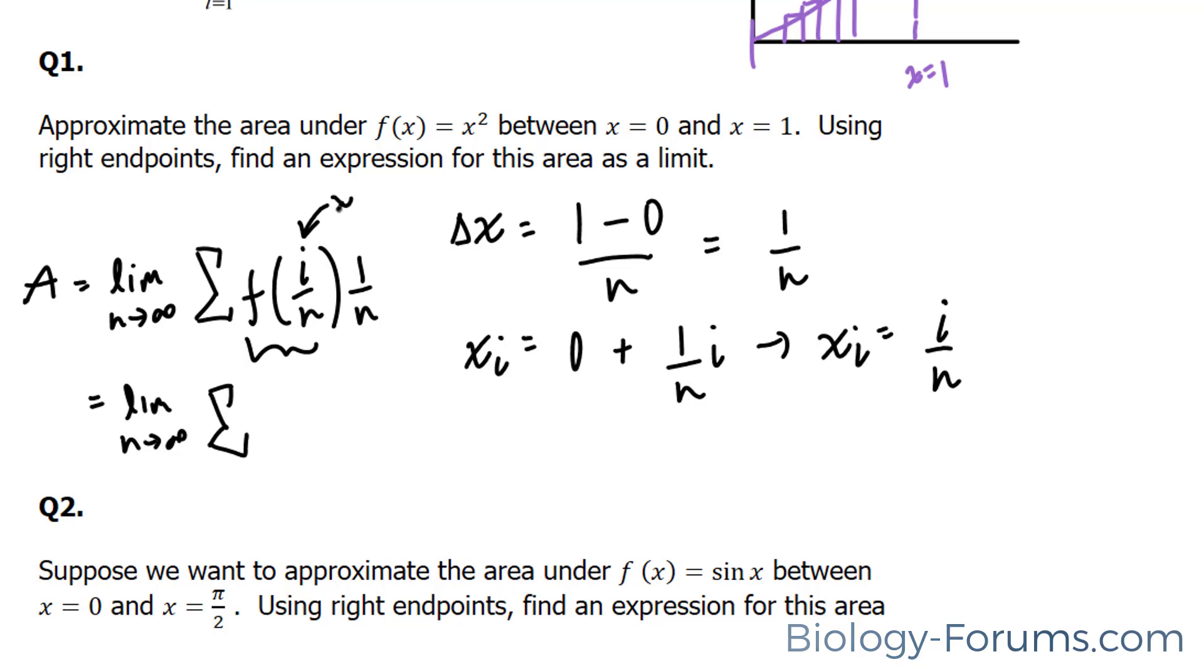Now keep in mind this squared value. So we end up with the limit as n approaches infinity, the sum for this function. Now remember, this represents your x. And we have to square this. We end up with i over n to the power of 2 times 1 over n. And that's it.